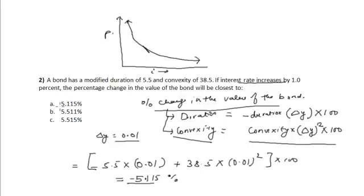The correct answer will be option A: the percentage change in the value of the bond will be closest to 5.115 percent, and it will be a decrease in the price of the bond.